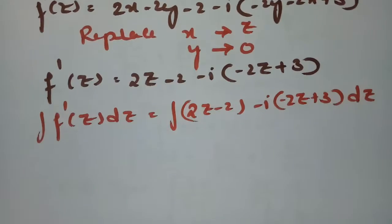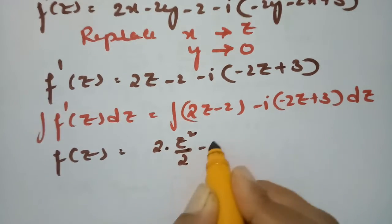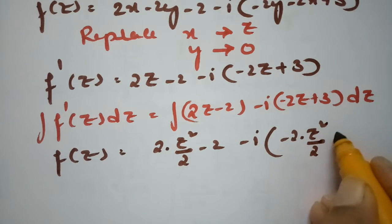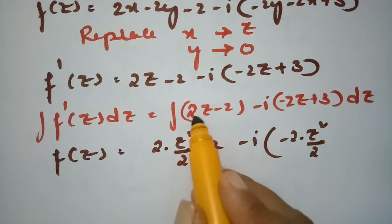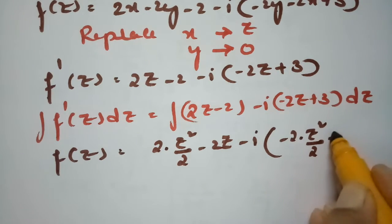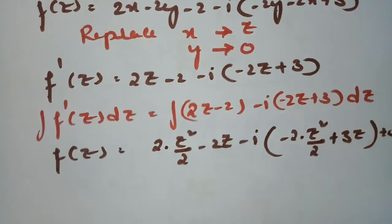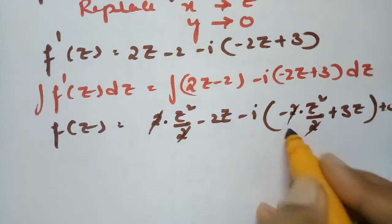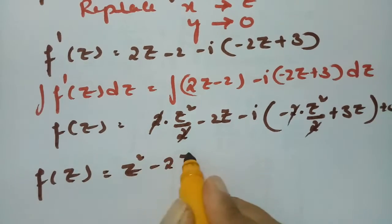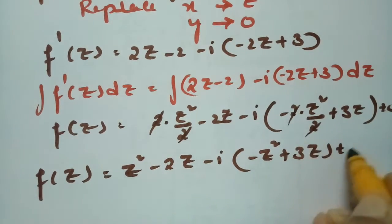After integration, f(z) = 2·(z²/2) - 2z - i(-2·(z²/2) + 3z) + c. Simplifying by cancelling the 2: f(z) = z² - 2z - i(-z² + 3z) + c.